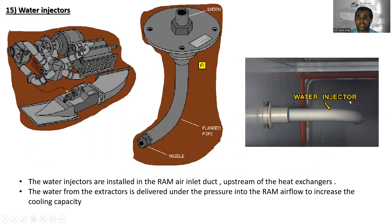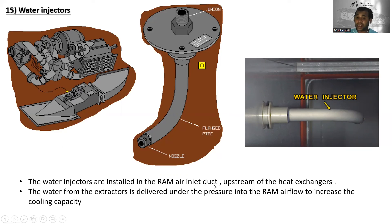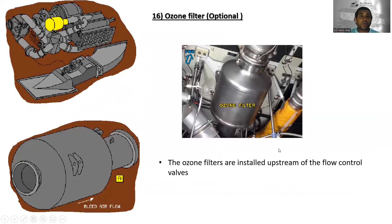The water injectors are installed in the ram air inlet duct upstream of the heat exchangers. The water from the extractor is delivered under pressure into the ram air flow to increase the cooling capacity.